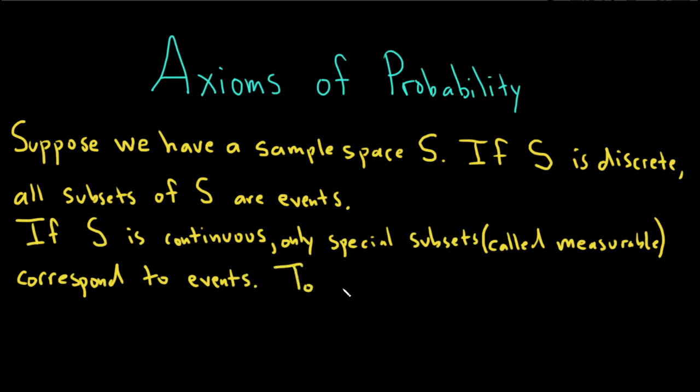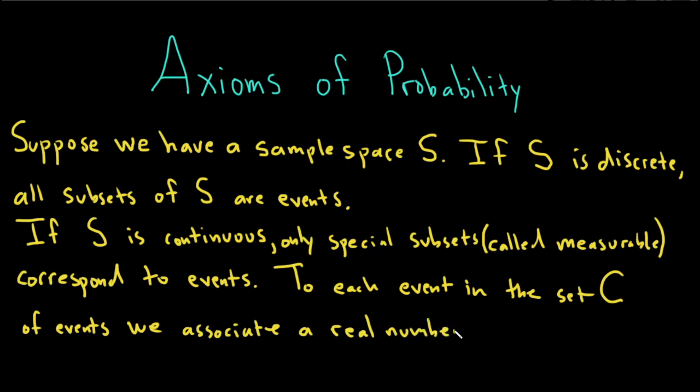So to each event in the set C of events we associate a real number which we'll call P of A.